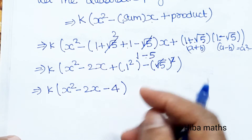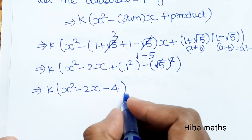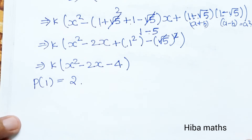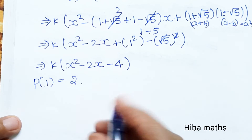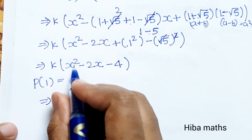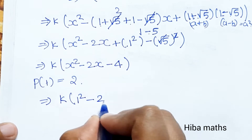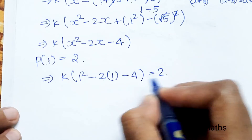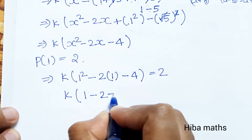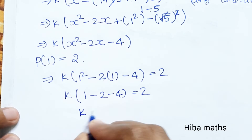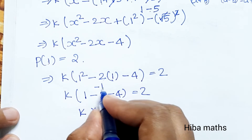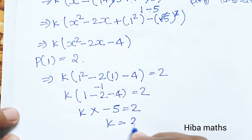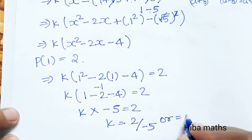Now this is our quadratic polynomial. Applying the condition p(1) = 2, substitute x = 1: k times (1 squared minus 2 times 1 minus 4) = 2. That gives k times (1 minus 2 minus 4) = 2, so k times (minus 5) = 2.